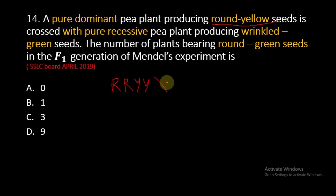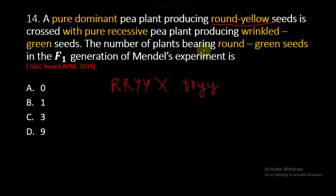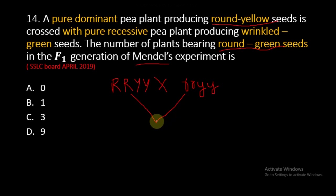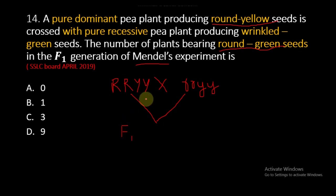It is crossed with a pure recessive pea plant, represented as small r small r small y small y — wrinkled and green seeds. In the F1 generation, the dominant character is expressed, so all F1 plants will have round yellow seeds.